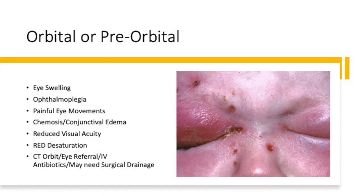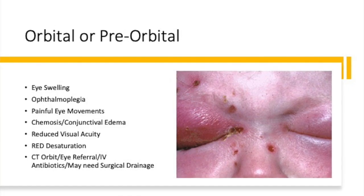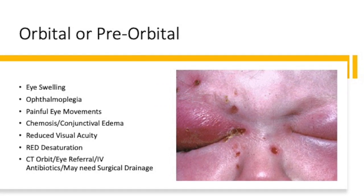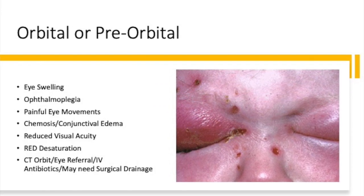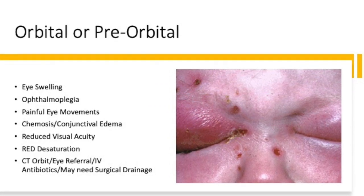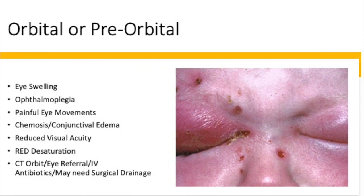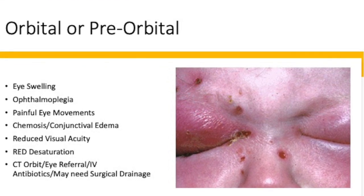For orbital cellulitis, get a CT scan, arrange an ophthalmology referral, secure IV access, and start IV antibiotics covering the implicated organisms — follow your trust's antibiotic guidelines. This condition may also require surgical drainage.